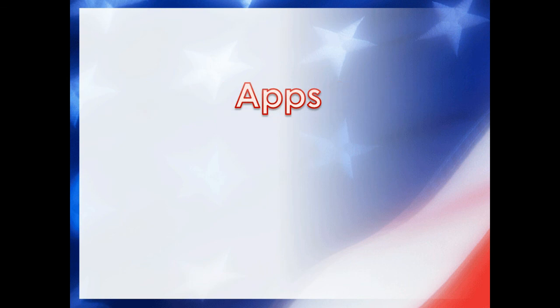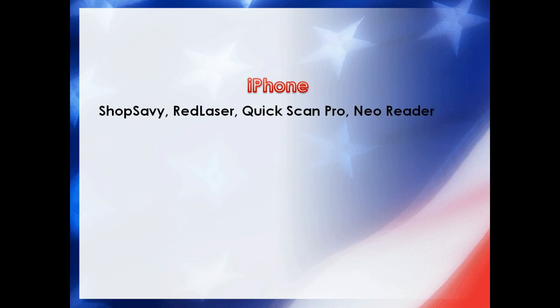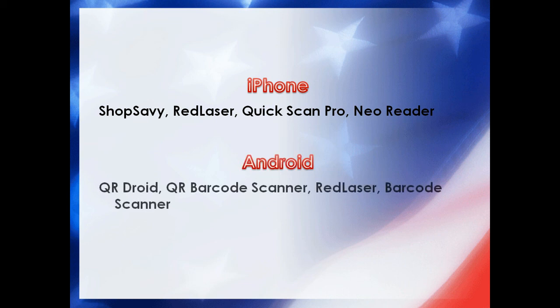To summarize what you need: a computer to create these and a site like qrstuff.com to generate the QR codes. Students need to download a scanning app on their phone — iPhone or Android. There are numerous apps, most are free. For iPhone: Shop Savvy, Red Laser, Quick Scan Pro, Neo Reader. For Android: QR Droid, QR Barcode Scanner, Red Laser, Barcode Scanner. I use Barcode Scanner — the image pops right up after you scan a URL or YouTube video.